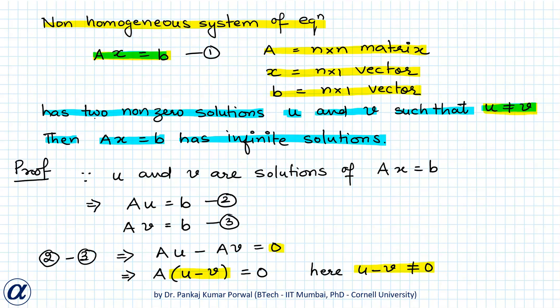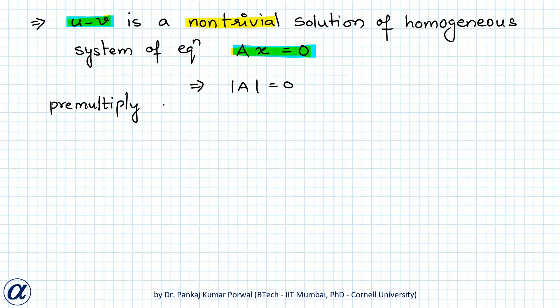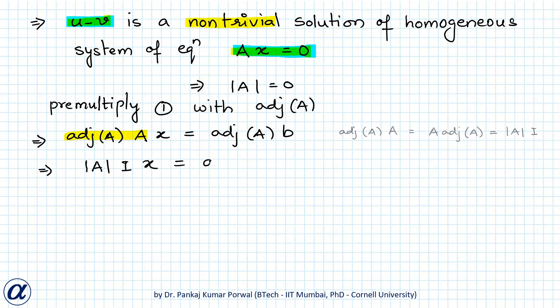So next I will pre-multiply my given non-homogeneous equation AX equals B by adjoint of A. Adjoint of A times AX will equal adjoint of A times B, and adjoint of A times A will be equal to determinant of A times I. This implies I times X, which is just simply X...